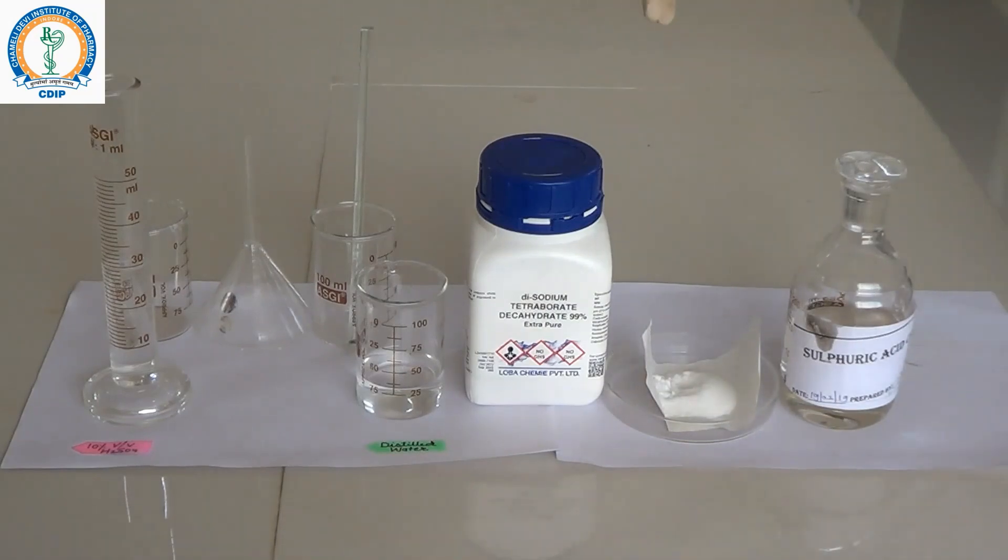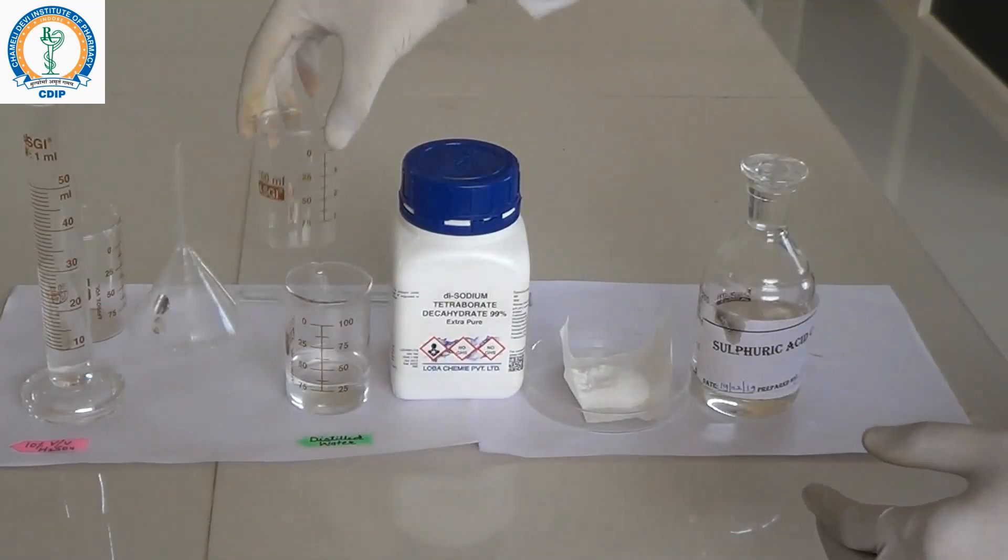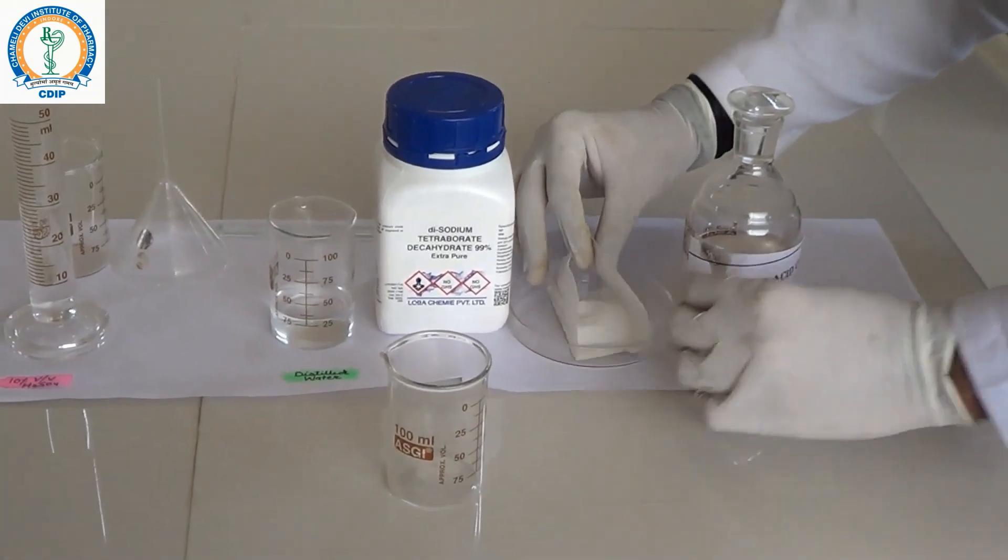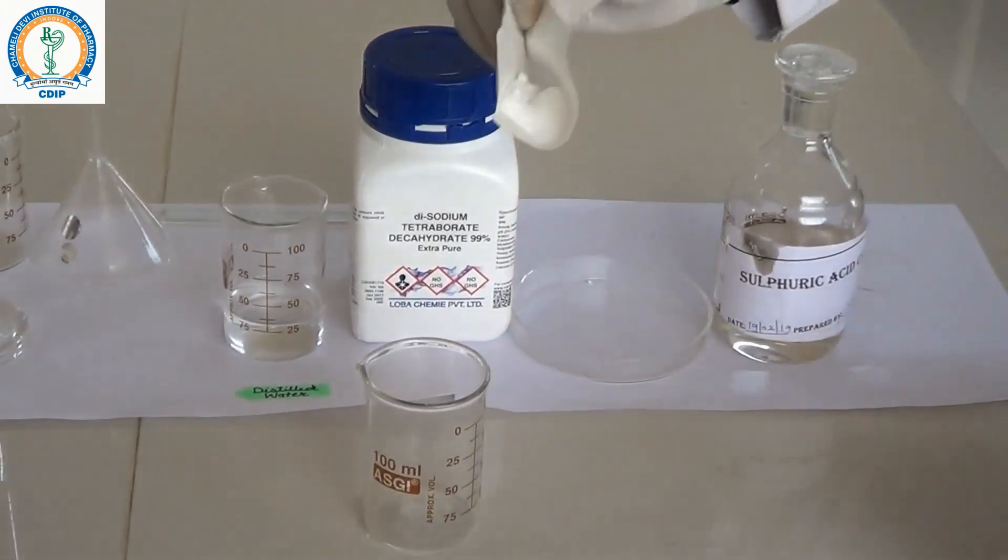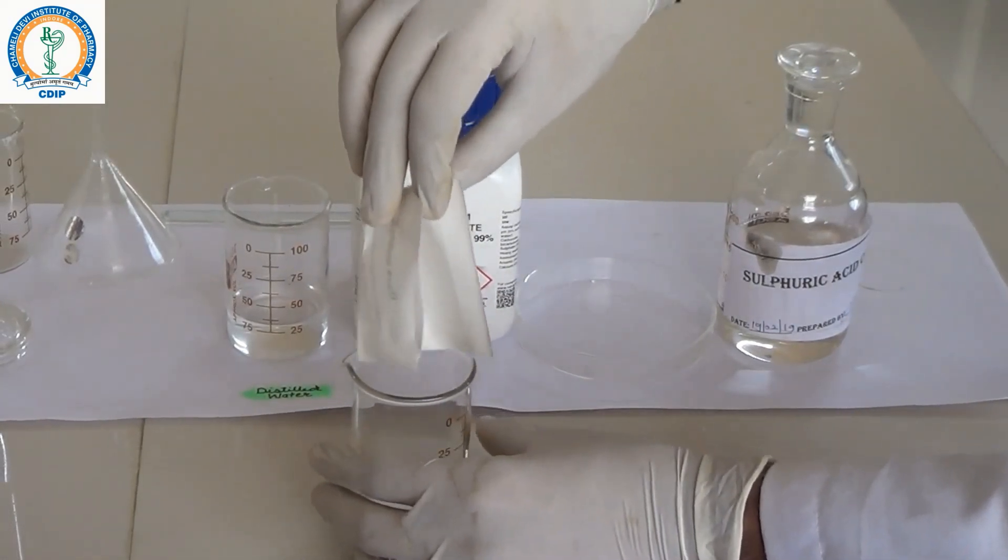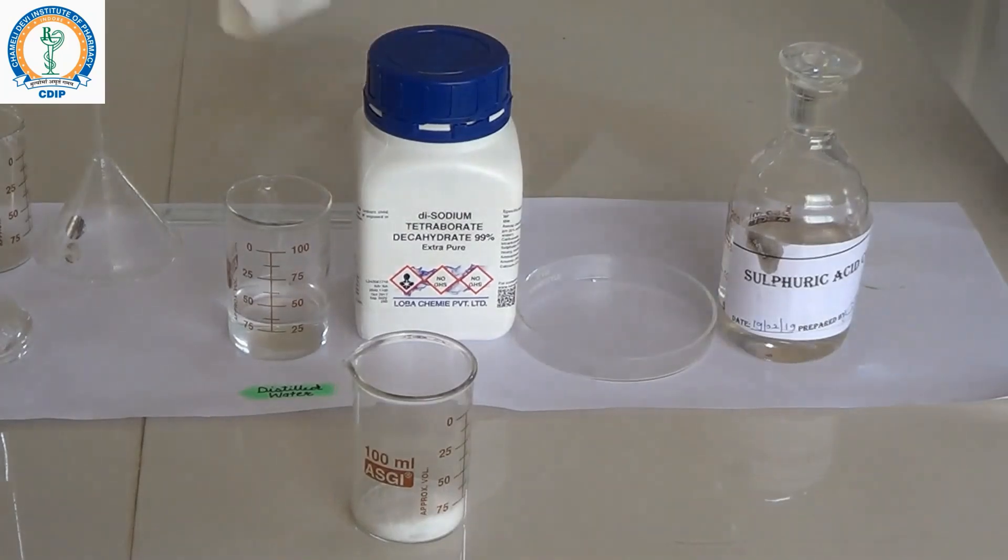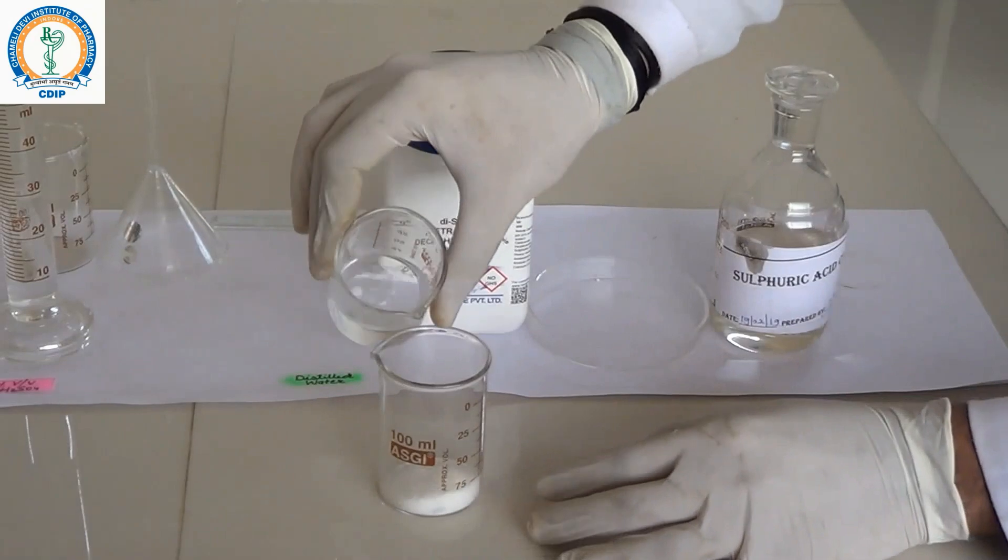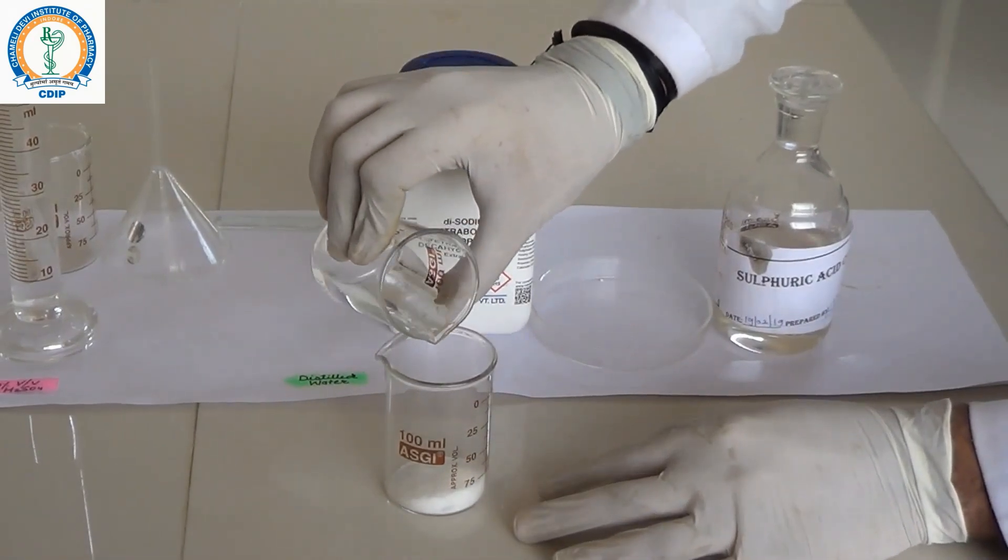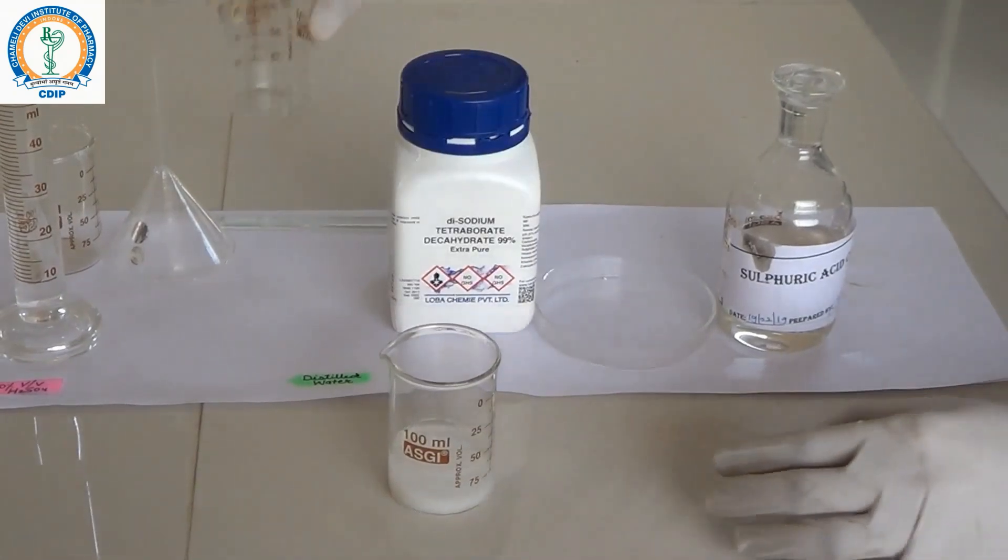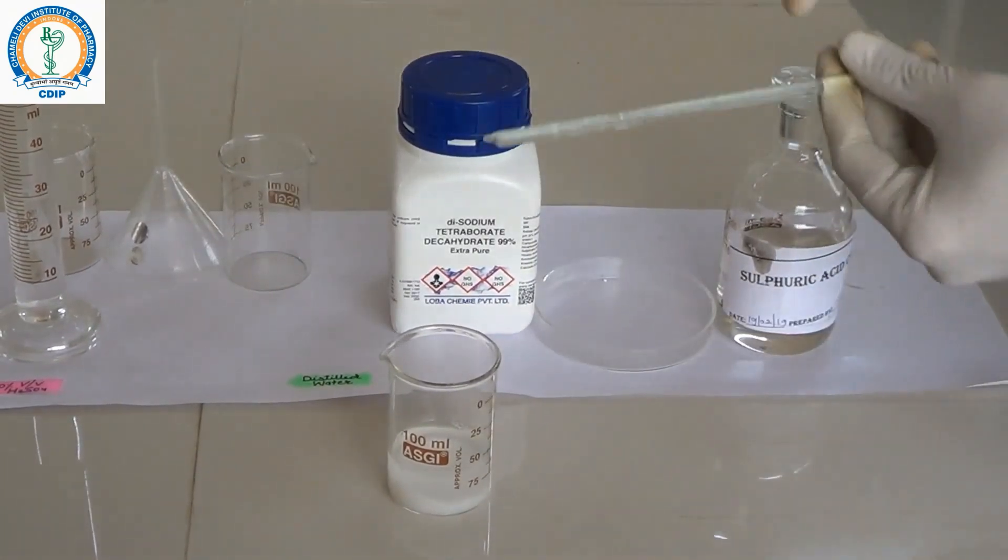For the preparation of boric acid, first of all we will transfer this borax into the beaker. Now add distilled water to it and mix the solution using a glass rod thoroughly.